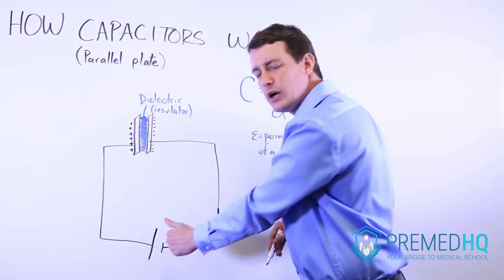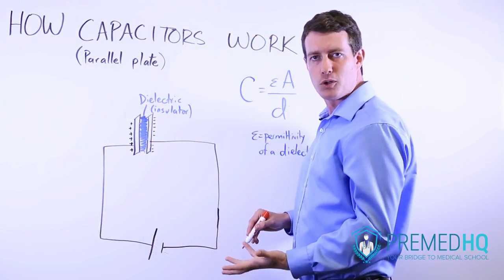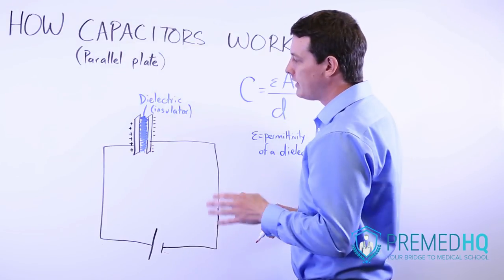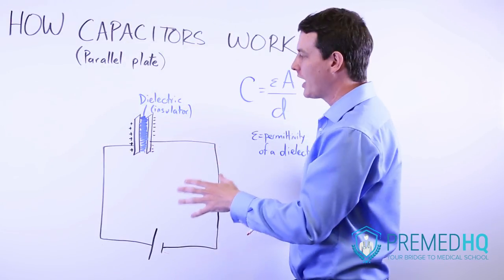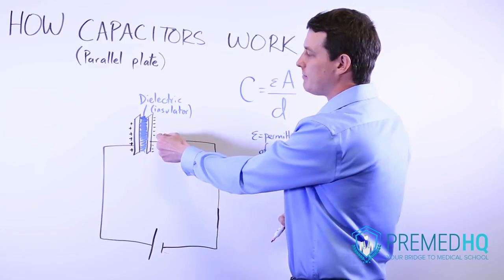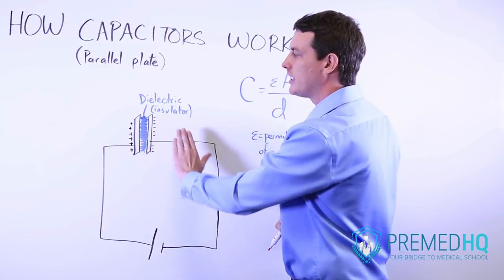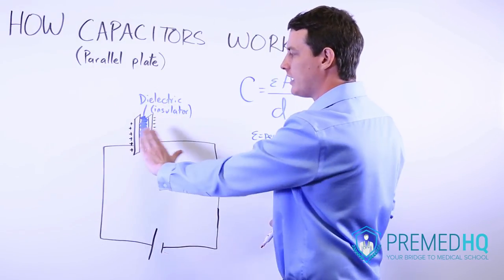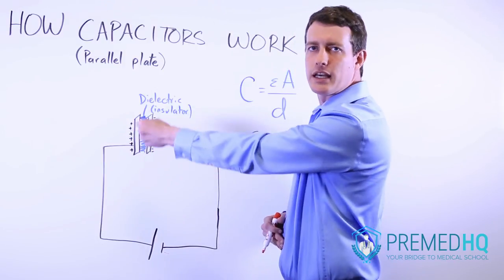Their goal is to get all the way to the positive pole of the battery, but the capacitor doesn't allow that. What happens instead is that negative charges accumulate because they're not able to cross over the dielectric and get to the other plate of the capacitor.